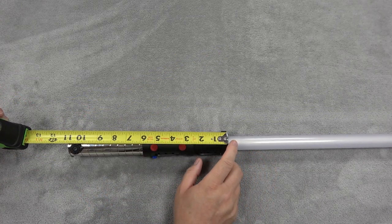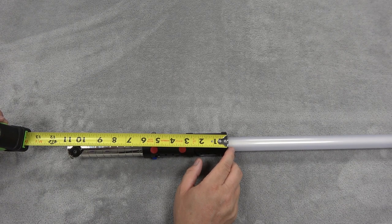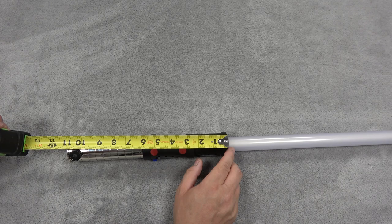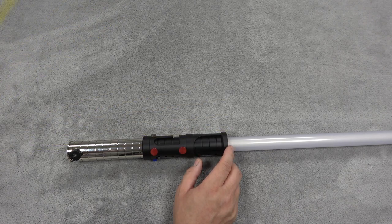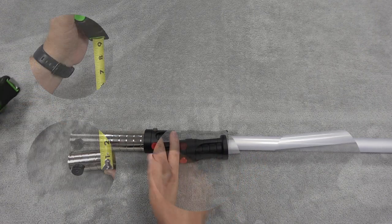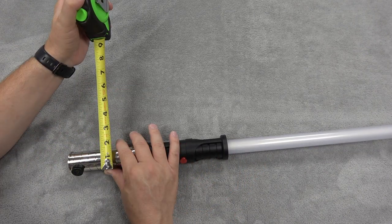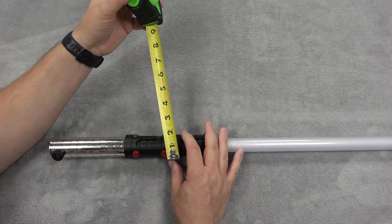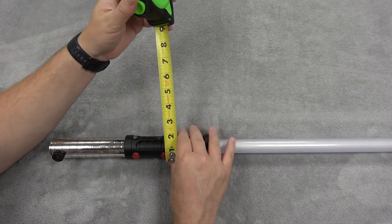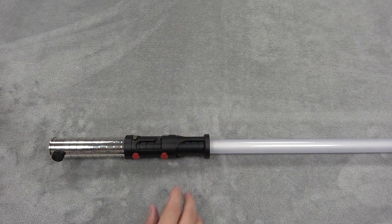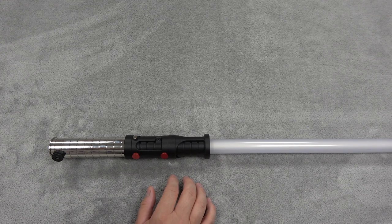Get started with the numbers. This is almost exactly 11 inches, just about a sixteenth of an inch short of 11 inches in its current configuration, right at an inch and a half here in the grip section, and just under two inches up here in this upper section.